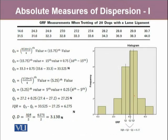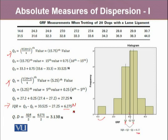Looking at the same example from the histogram, we can clearly see there is one outlying observation. However, Q1 and Q3 are not affected by this outlying observation. The median is around 30-something, and using the standard method of Q3 and Q1, the interquartile range turns out to be 6.275 Newtons. This is represented on the histogram, containing approximately the middle 50% of the data, while excluding 25% on the lower side and 25% on the upper side.